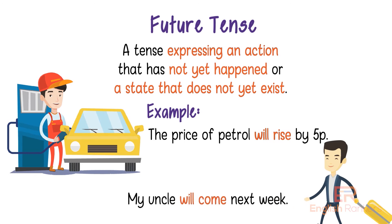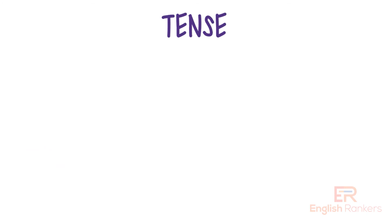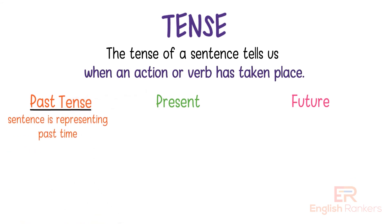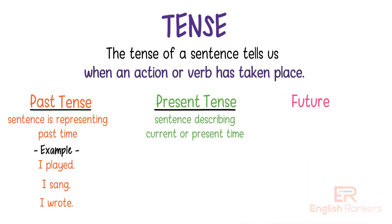So what is tense? The tense of a sentence tells us when an action or verb has taken place — it could be past, present, or future. Past tense: if a sentence represents past time, we say that sentence is in past tense. For example: I played, I sang, I wrote. Present tense: if a sentence describes a current or present time event, we say that sentence is representing present tense. For example: I am playing, I am singing, I am writing.